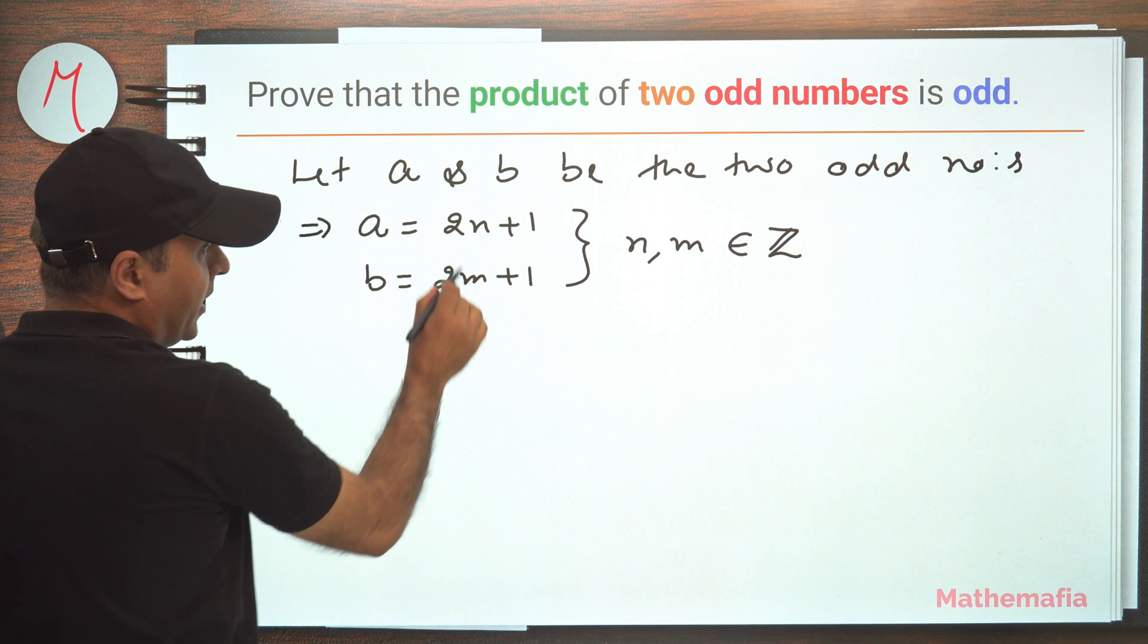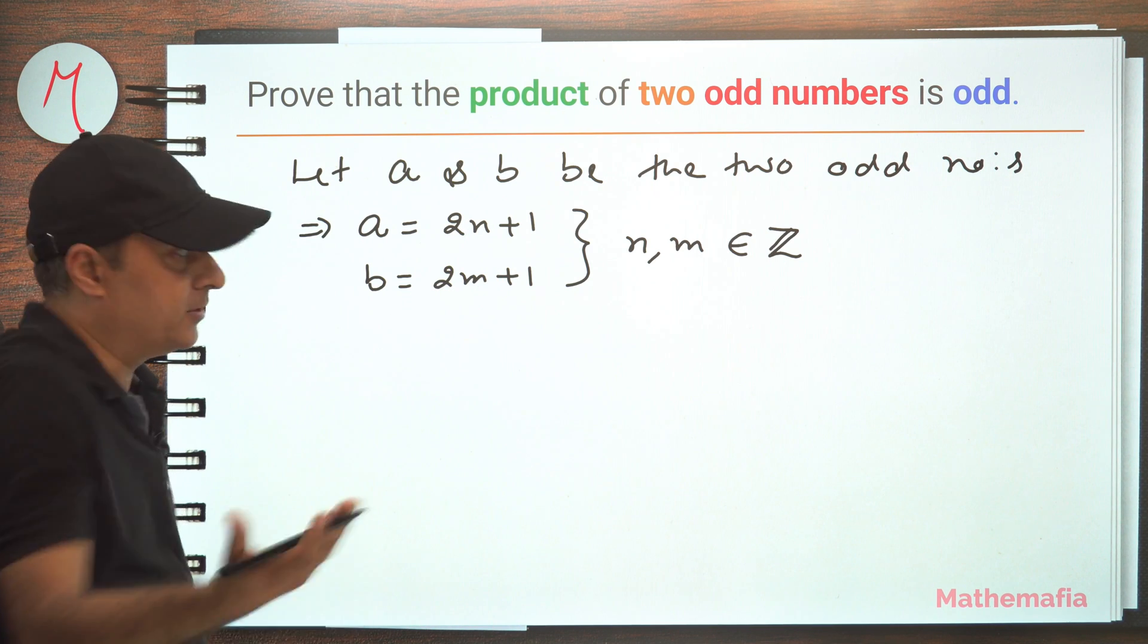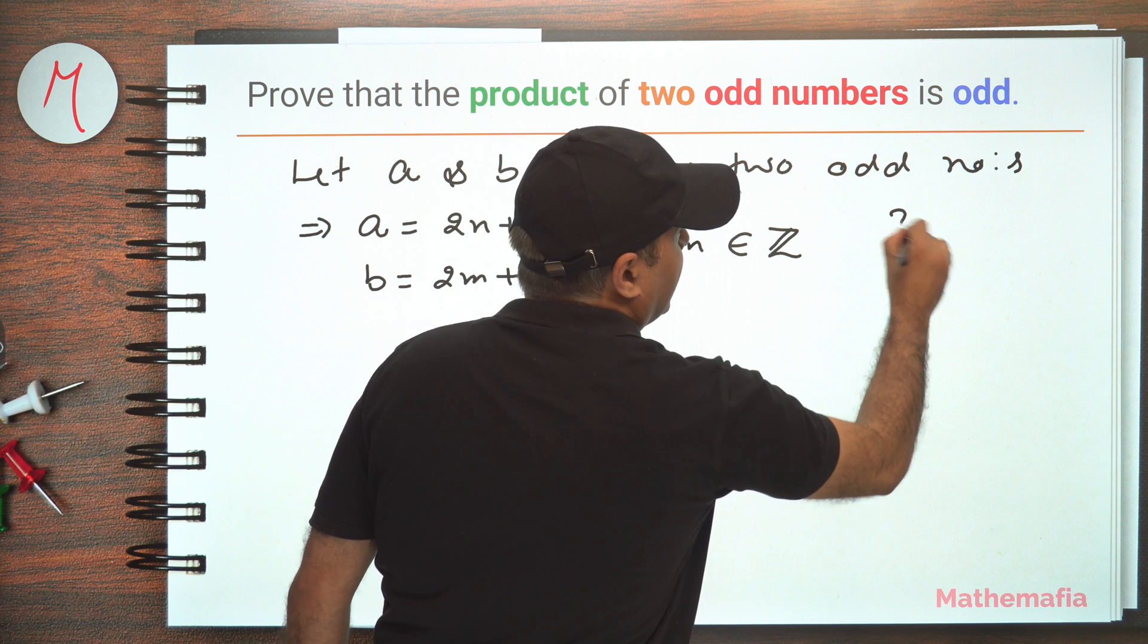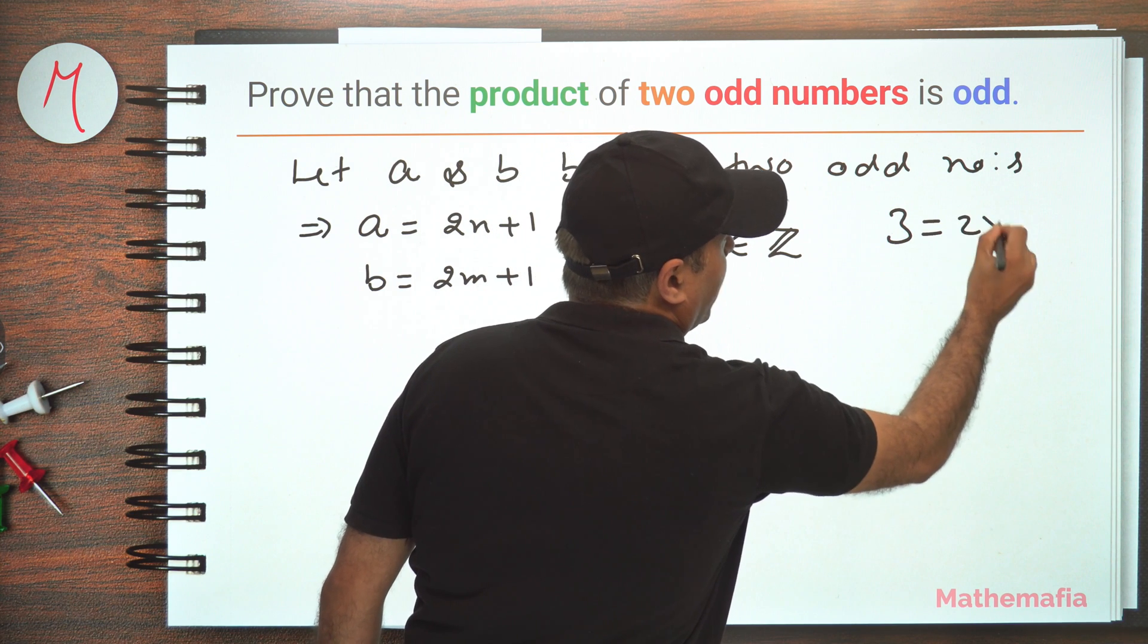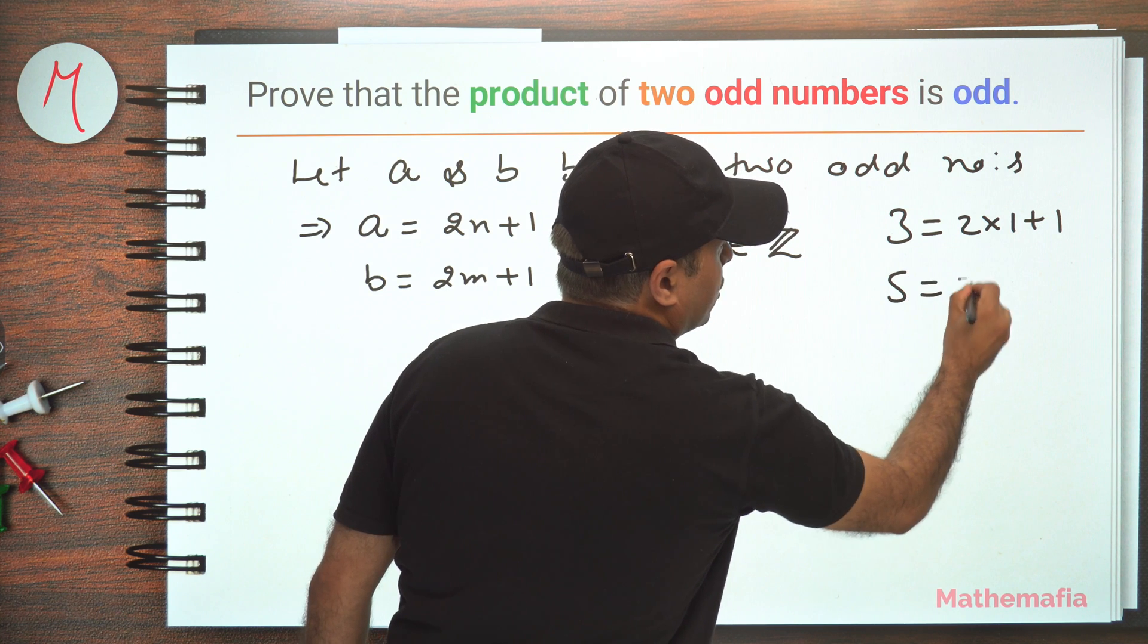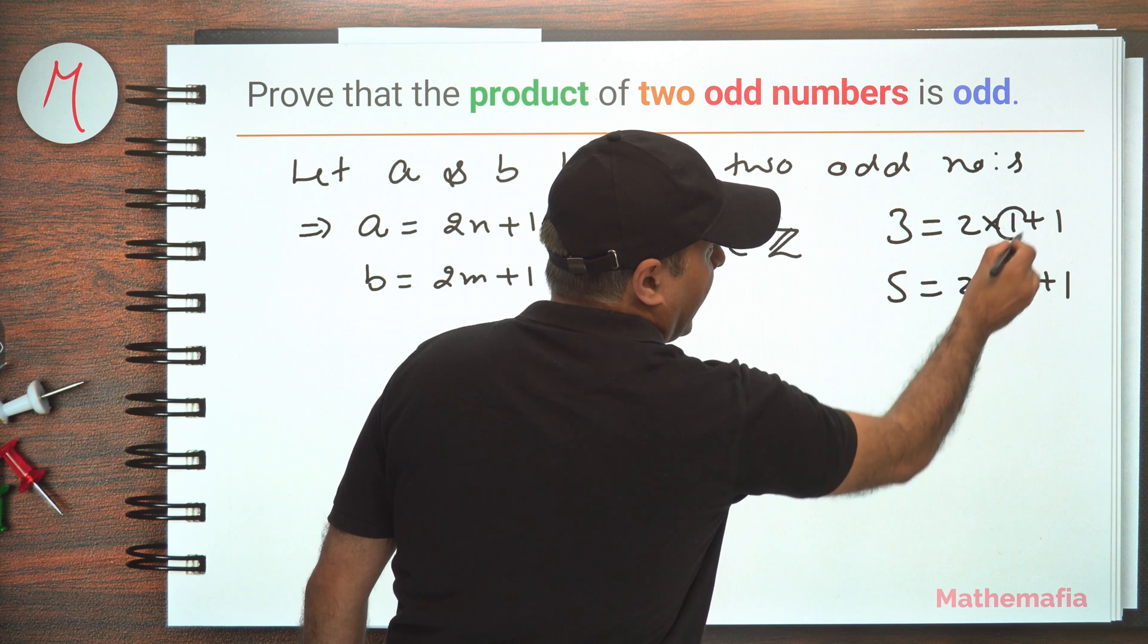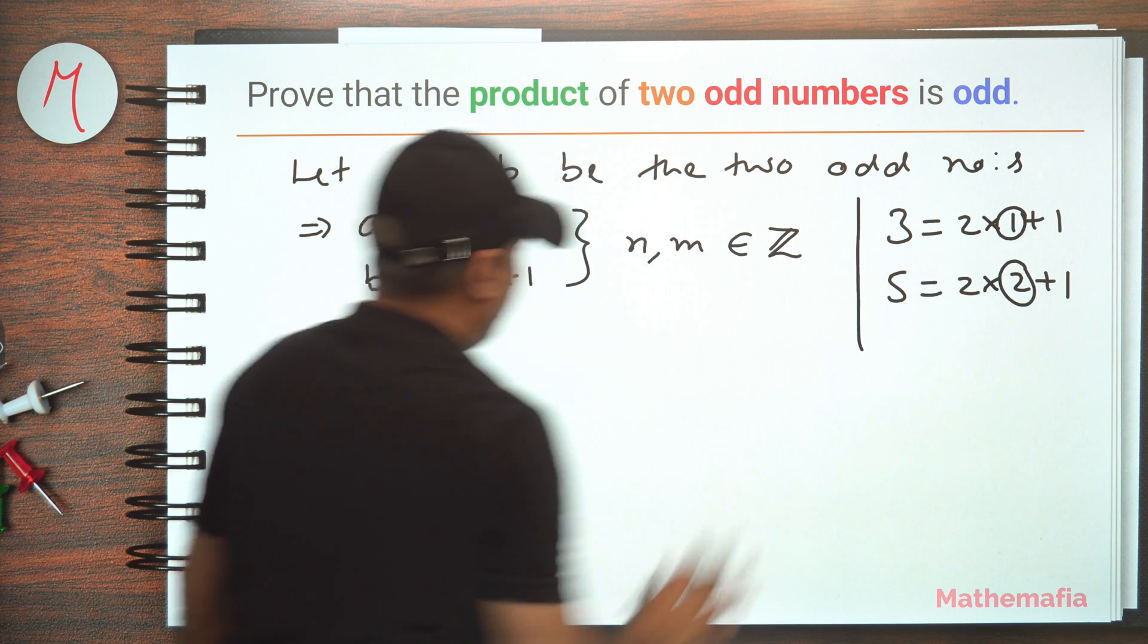So why n here and m here? Because these two can be two different odd numbers. For example, 3 can be written as 2 times 1 plus 1, and 5 can be written as 2 times 2 plus 1. So this is n and this is m. So these can be different.